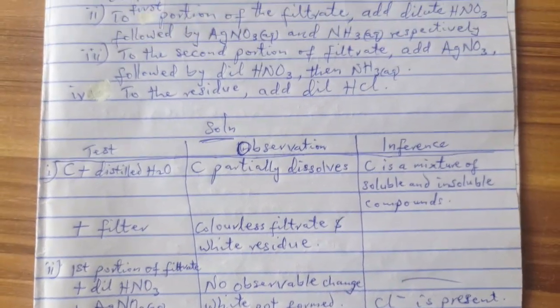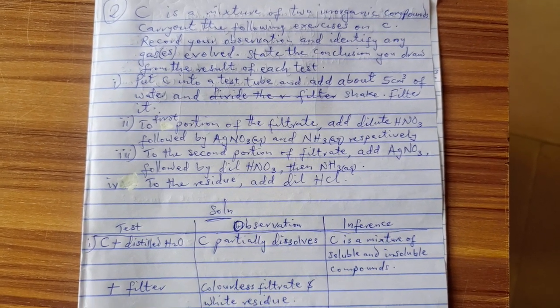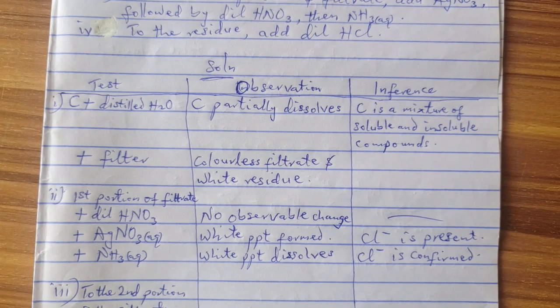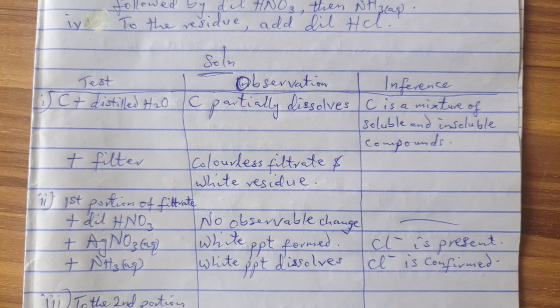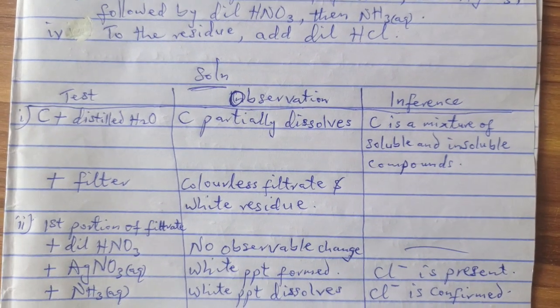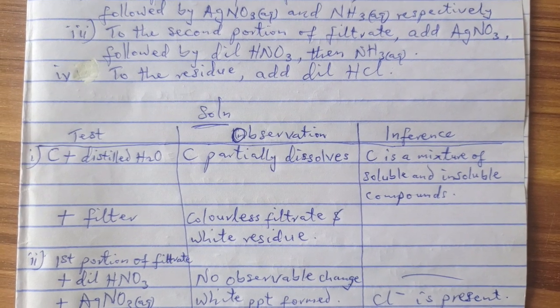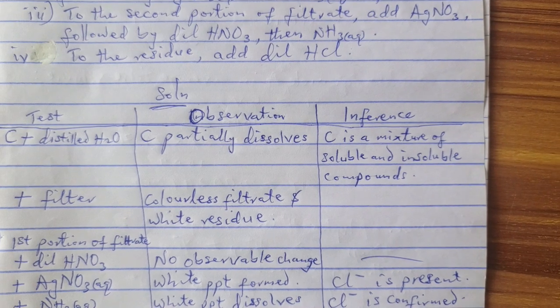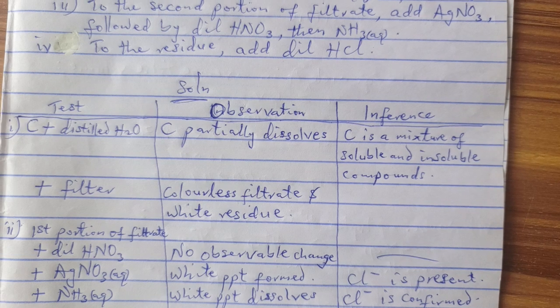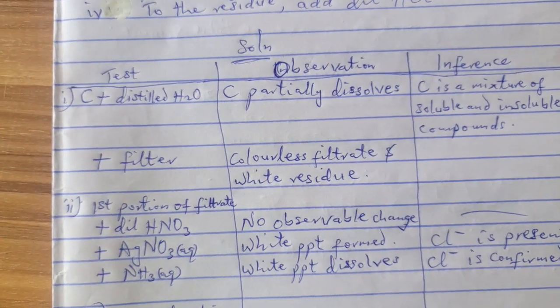Now the first thing they asked you to do. They said you should do what? They have given you C, sample C, to be mixture of two inorganic substances. You should add distilled water to it. Now put it into test tube and add distilled water to it and report that on that test. So when you add the distilled water to it, what is expected is that the C partially dissolves. It will not completely dissolve. So when it partially dissolves, now what you should know is that C under inference now, C is a mixture of soluble and insoluble compounds.